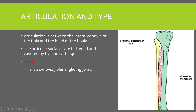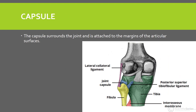The articulation is between the lateral condyle of the tibia and the head of the fibula. This joint is called the proximal tibio-fibular joint. The articular surfaces are flattened and they are covered by hyaline cartilage. This is a synovial joint, which is of the plane or gliding variety.